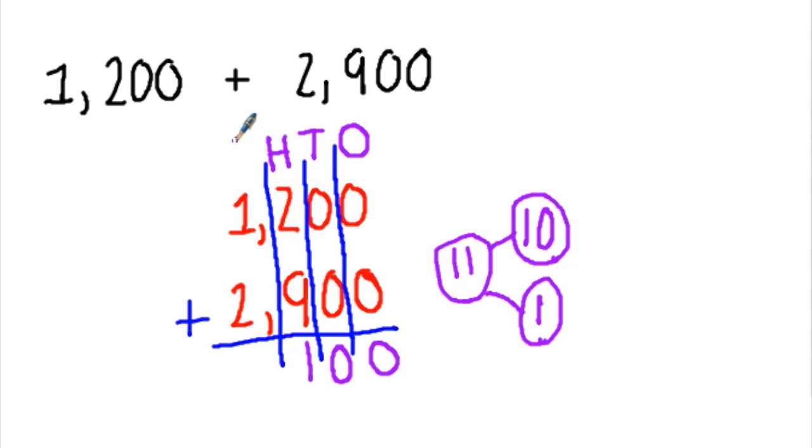So now with my ten hundreds I have an additional one thousand. So I'll write that above. So now I'm ready to add: one thousand plus one thousand is two thousand, plus another two thousand is four thousand.